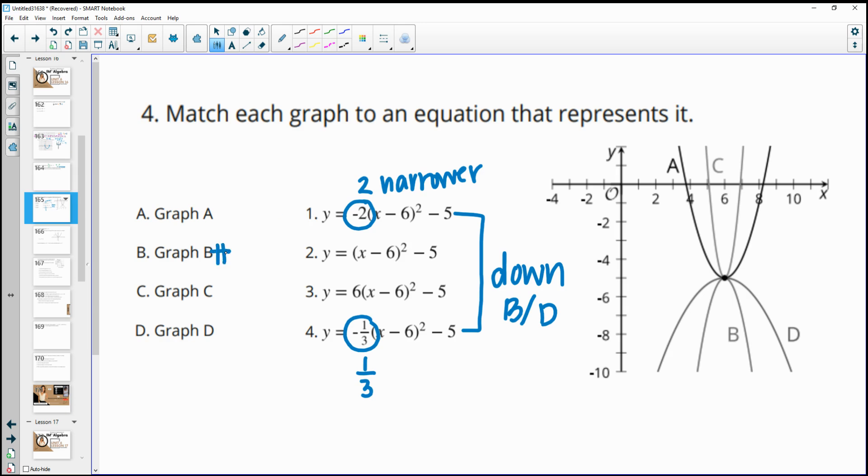So number 1 goes with b, which means that number 4 goes with d. That 1/3, OK, when it's less than 1, when it's between 0 and 1 is going to flatten it. So it's going to be flatter than a number bigger than 1.